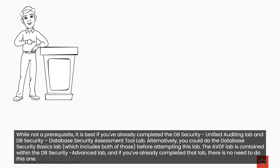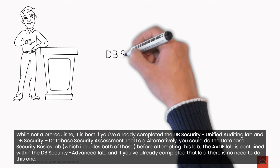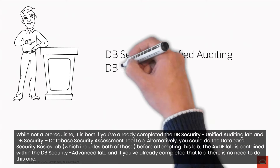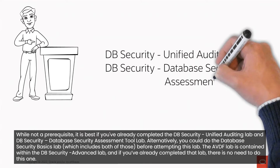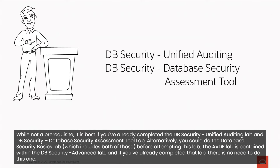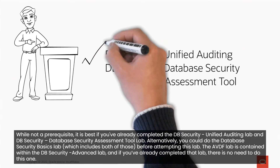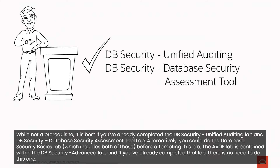While not a prerequisite, it is best if you've already completed the dbsecurity-unified auditing lab and dbsecurity-database security assessment tool lab. Alternatively, you could have done the database security basics lab, which includes both of those, before attempting this lab. The AuditVault and Database Firewall lab is contained within the database security advanced lab, so if you've already completed that lab, there's no need to do this one.